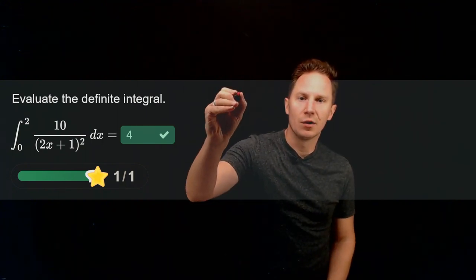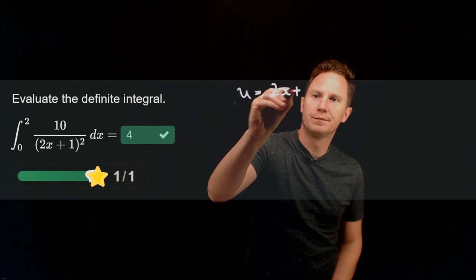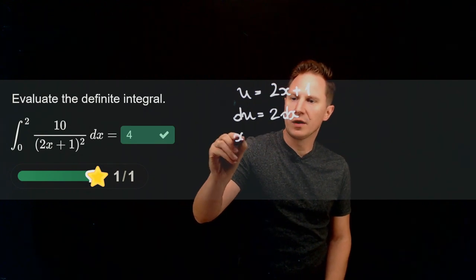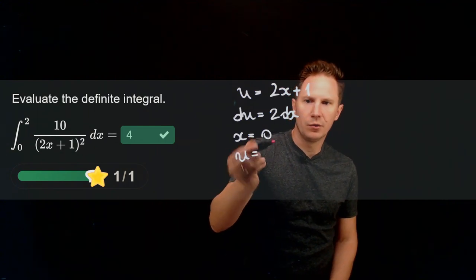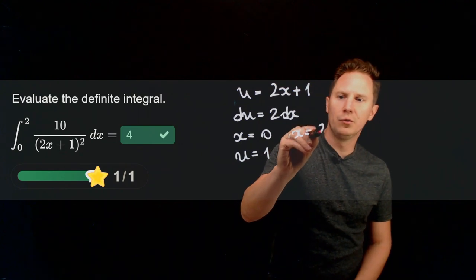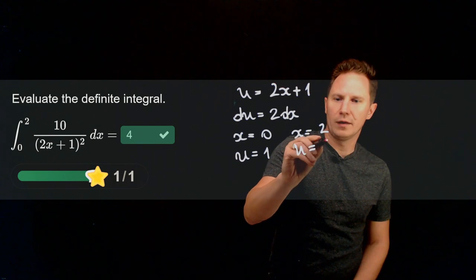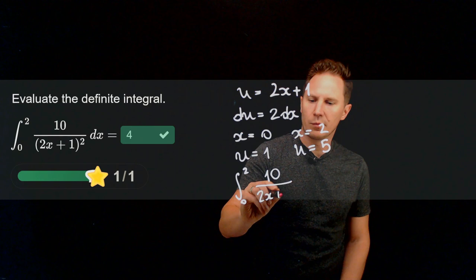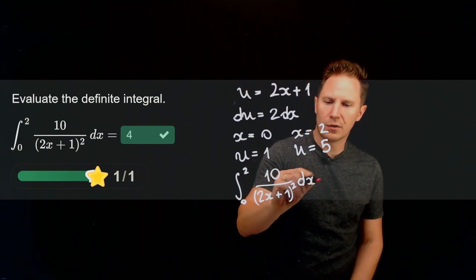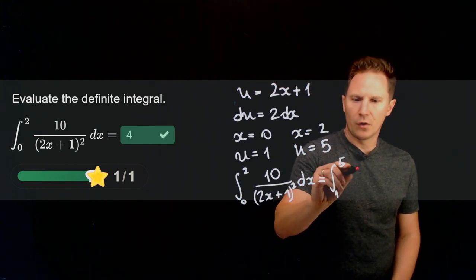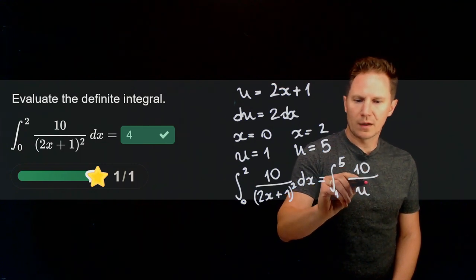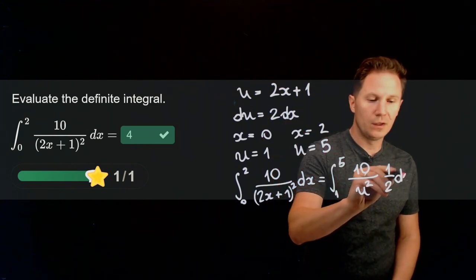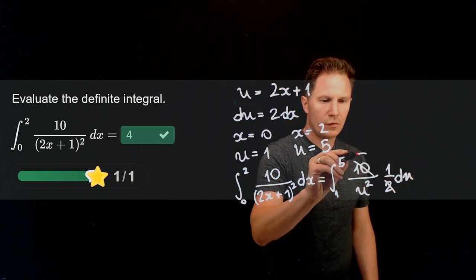So simply substituting u equals 2x plus 1 means that du is 2dx and when x is equal to 0, u is equal to 1 whereas when x is equal to 2, u is equal to 5. So then our original integral, the integral from 0 to 2 of 10 over (2x + 1) squared dx turns into the integral from 1 to 5 of 10 over u squared and du is 1 over 2 dx.